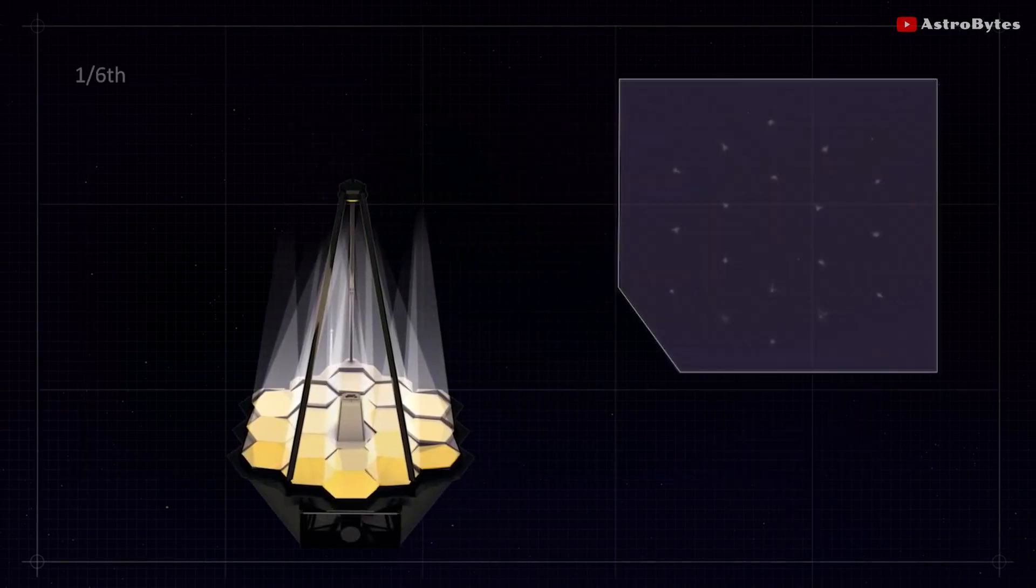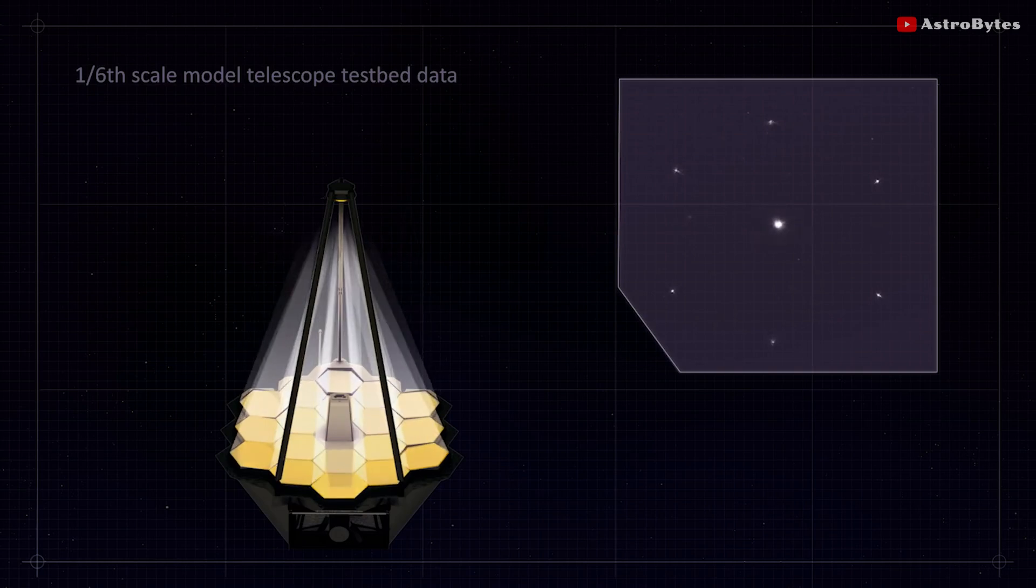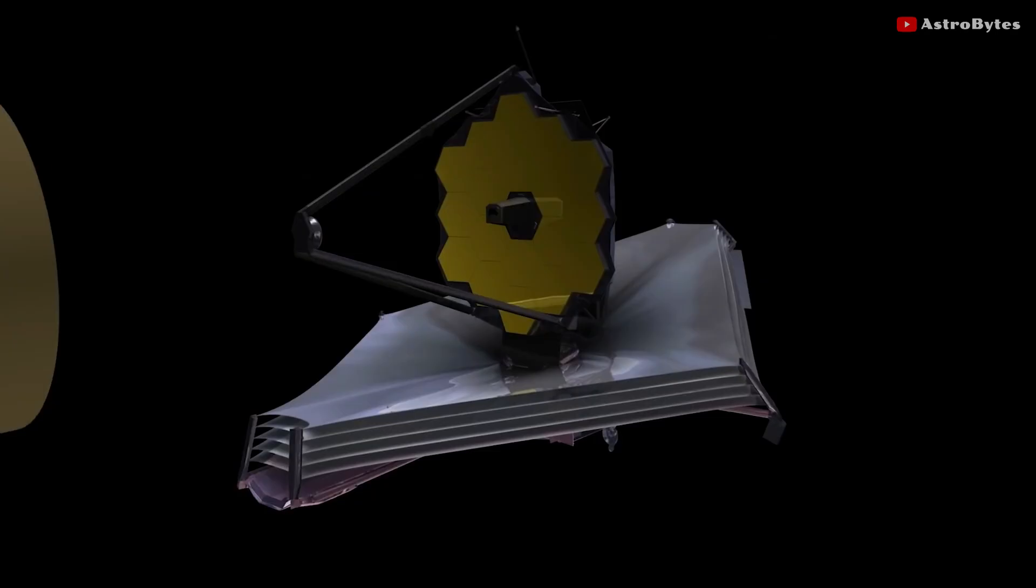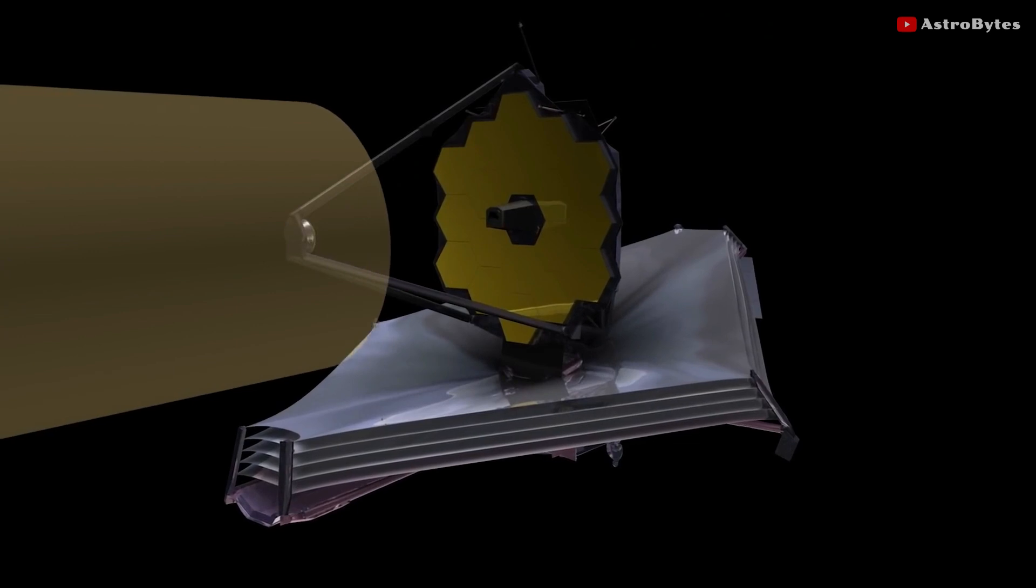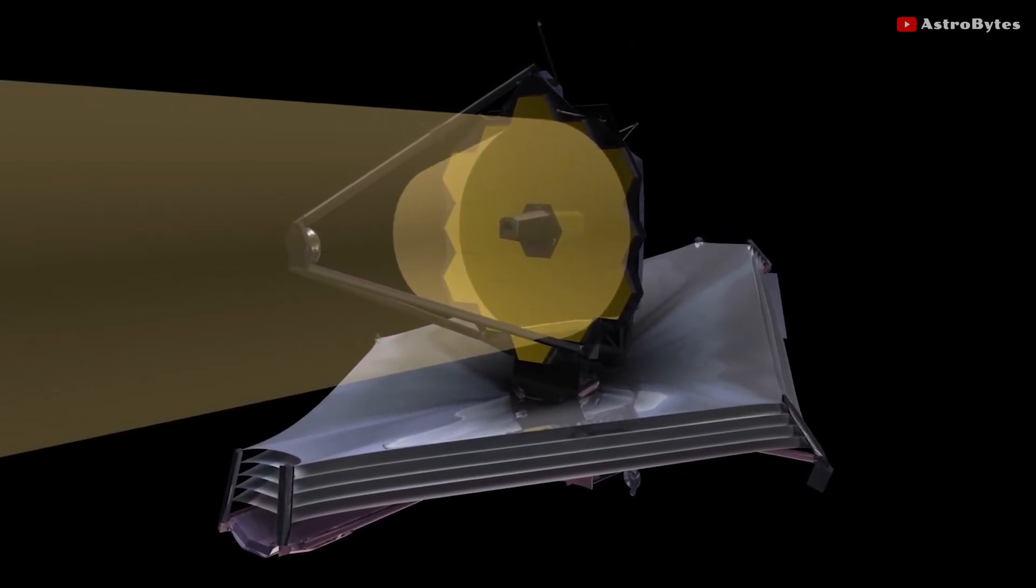When the mirrors are aligned, all the segments will work as a single mirror and those 18 copies will be right on top of each other. This allows the telescope to add the light reflected by all the segments together so that it can spot fainter and more distant objects.